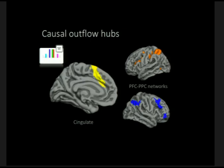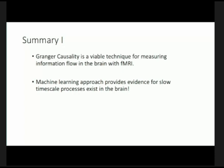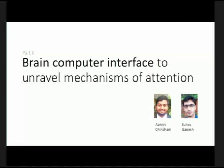To summarize: Granger causality is a viable technique for measuring information flow in the brain, and the machine learning we applied provides evidence for slow time-scale processes. Not everything in your brain happens at the time scale of milliseconds — there are things that happen very slowly, and we can measure those with functional MRI. Let me quickly wrap up by giving you a flavor of what we are doing with EEG.